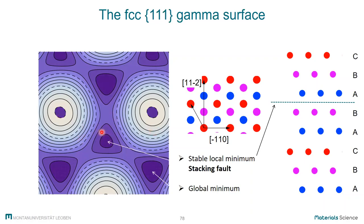This stacking fault point in the gamma surface is very important for dislocations in FCC. Looking normal to the (111) surface: normal FCC stacking is ABCABC, but when we get ABCAB, we get local HCP stacking — introducing a fault. This is the stacking fault. Since HCP is energetically close to FCC, the energy difference between FCC and HCP can be very small for some materials, though for aluminum it is quite high.